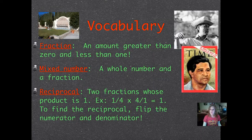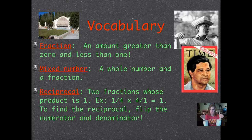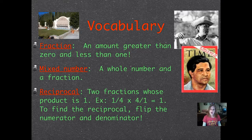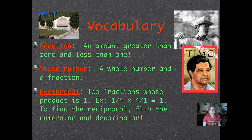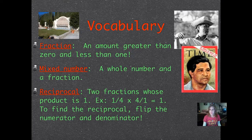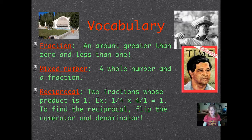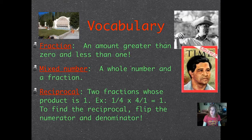Our vocabulary for tonight is fraction, that's an old vocabulary term. Remember that means an amount greater than zero and less than one, so it's within a pretty small space. A mixed number, which is a whole number and a fraction. And a reciprocal, which is two fractions whose product is one. So for example, the reciprocal of one-fourth is four over one, which when you multiply them, one times four is four and four times one is four, and four divided by four is one. So you can see that pattern there. To find the reciprocal, flip the numerator and the denominator.